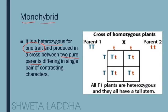Let us see the example. Parent 1 has the genotype capital T capital T — the phenotype is tall. The other parent has the genotype small t small t — a pure plant with the phenotype dwarfness. The gametes produced by the tall parent are capital T only; the gametes produced by the dwarf parent are small t only — both gametes of each parent are similar types.